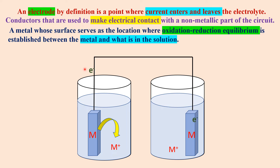The second electrode will gain the electrons. The metal ions present in the electrolyte will move towards this electrode. At this electrode, reduction takes place — that is, the gain of electrons occurs — and the metal ions from the electrolyte will deposit at the surface of the electrode.